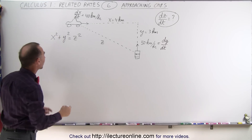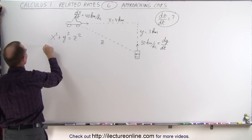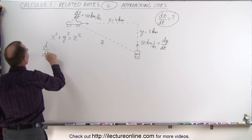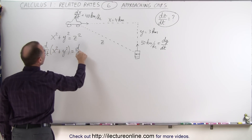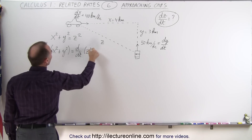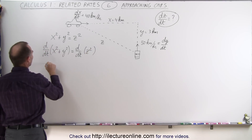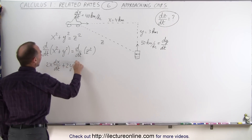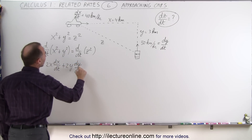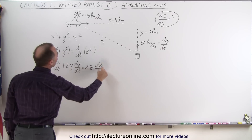We're going to find that by taking the derivative with respect to time of both sides of the equation. The d/dt of the left side is equal to the d/dt of the right side. So on the left side, we end up with 2x times dx/dt plus 2y times dy/dt is equal to 2z times dz/dt.